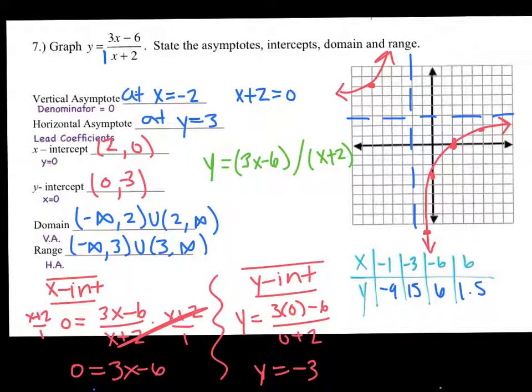I also just realized that for my domain, I forgot my negatives. This is skipping the negative 2 value, not the positive 2 value. So just fix that quickly. So the domain for this one should actually be negative infinity to negative 2 and negative 2 to positive infinity. I just forgot my negatives.